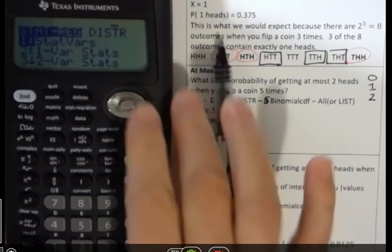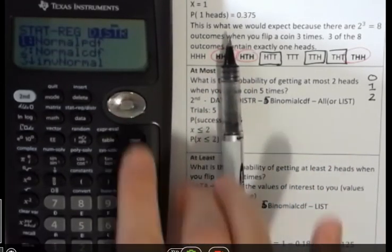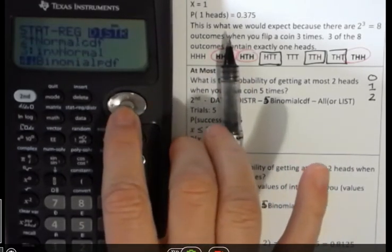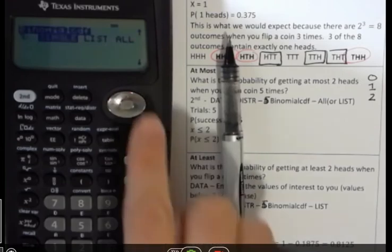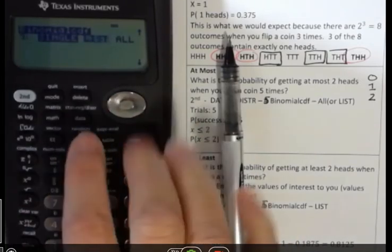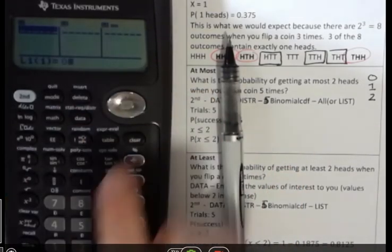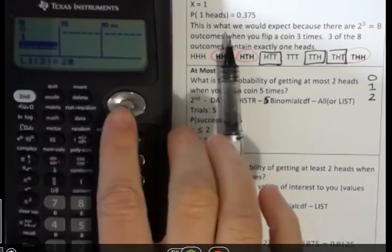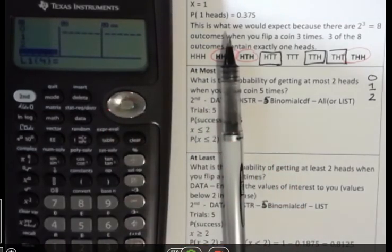Second function data, and then go over to distribution. And again, down to number five. Hit enter. I'm going to go to list. Oh, I need to do data first. 0, 1, and 2. So I'm going to enter the three data points that I'm interested in.